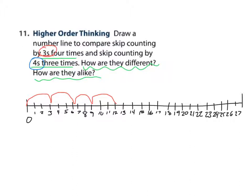Now, let's count by 4s 3 times. Again, start at the 0. 1, 2, 3. How are they different and how are they alike?